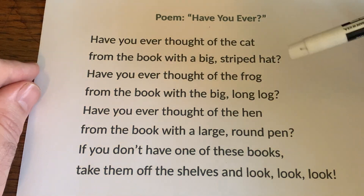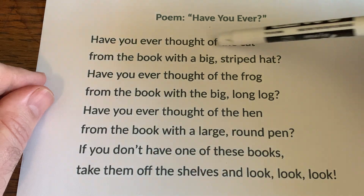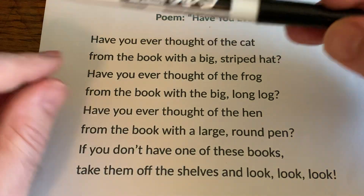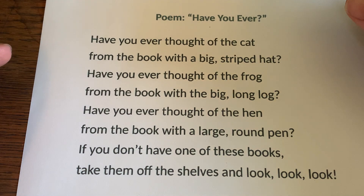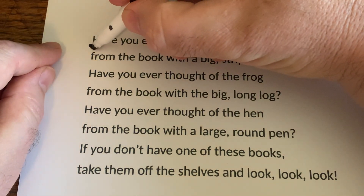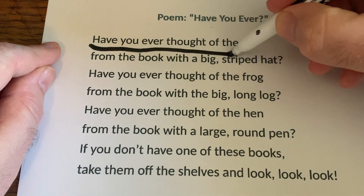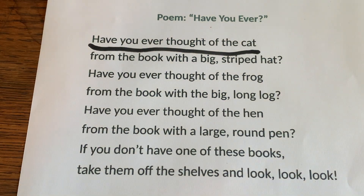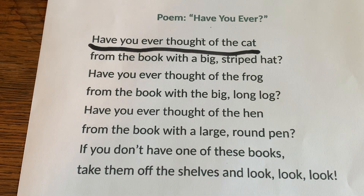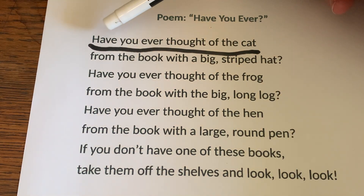Our first mystery word is going to be in this very first line: Have you ever thought of the cat? So the mystery word has a vowel in it, and the vowel is an O. So clap when you see a word that has an O in it.